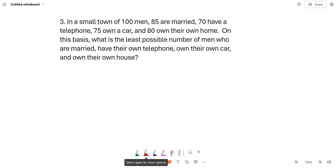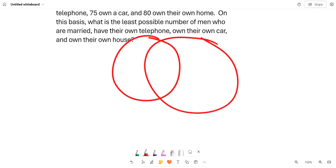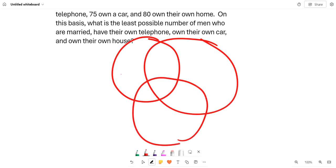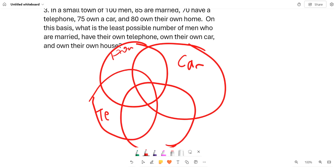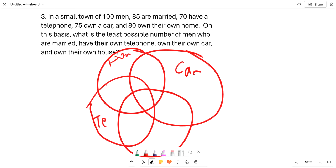So you can draw a Venn diagram with four circles: one, two, three, and four. And we call this car, house, telephone, and married.